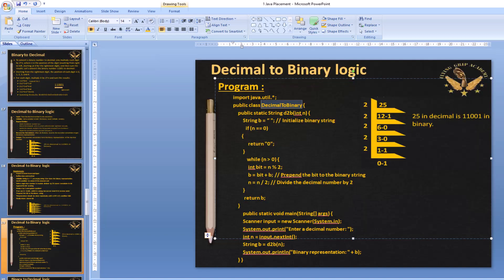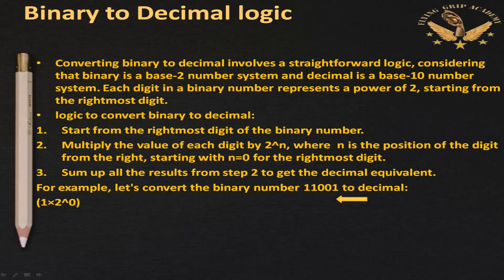Now let's convert binary to decimal. Binary is a base-2 number system and decimal is base-10. Each digit in a binary number represents a power of 2 starting from the rightmost digit. The logic: start from the rightmost bit of the binary number 11001, then multiply the value of each digit by 2^n, where n is the position from the right starting with n = 0.